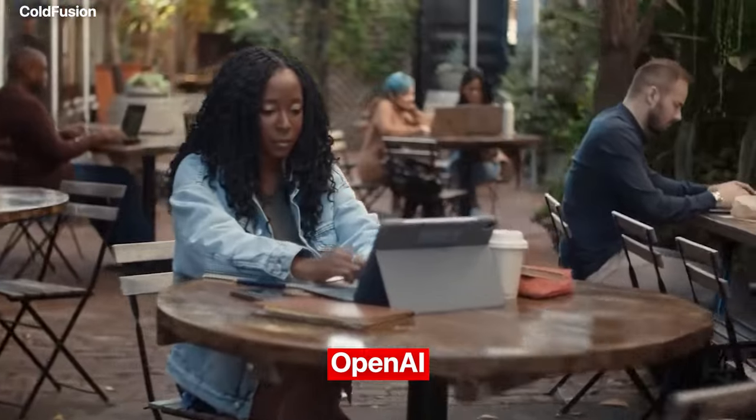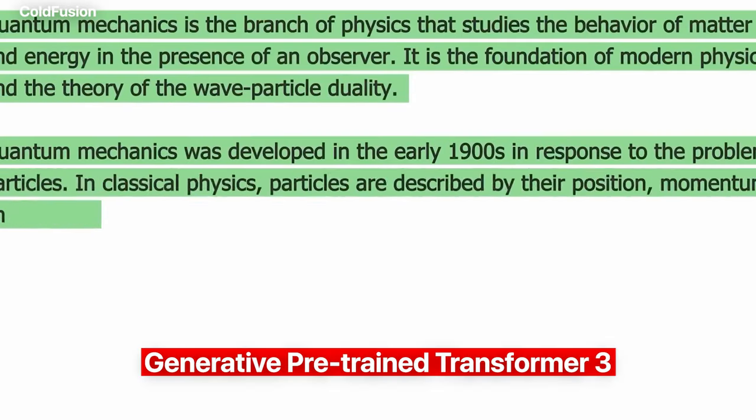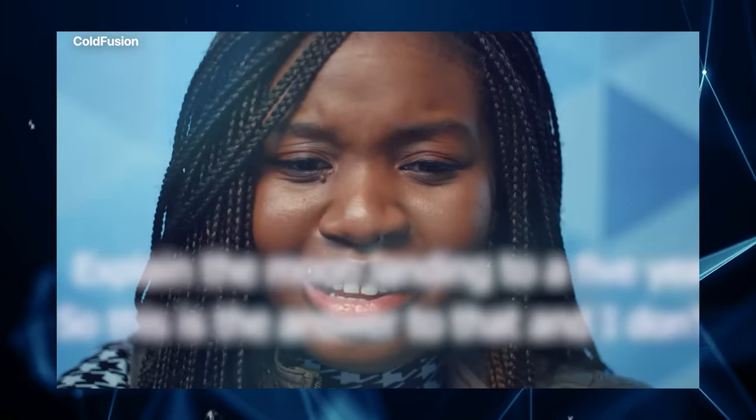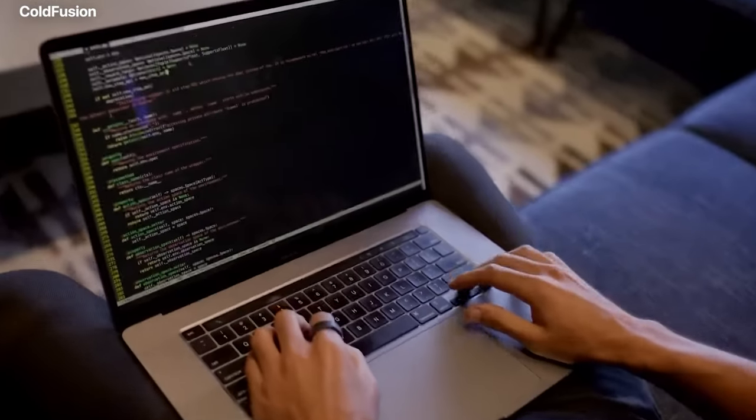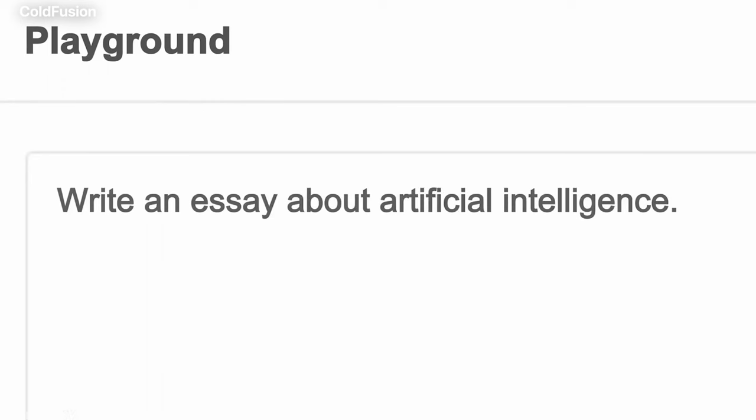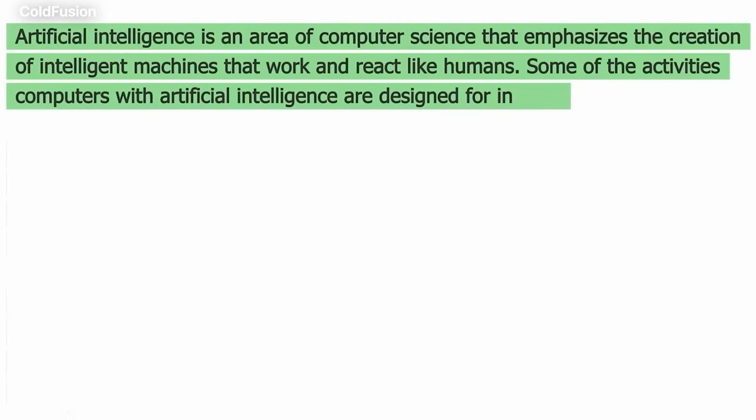GPT-3. GPT-3 is an advanced natural language processing algorithm created by OpenAI. It stands for Generative Pre-trained Transformer 3. GPT-3 is a powerful artificial intelligence model trained on a large corpus of text data and can generate human-like text. It can generate text, complete tasks, and answer questions without being explicitly programmed.